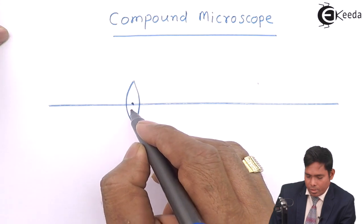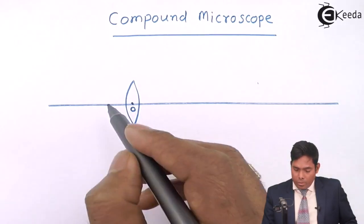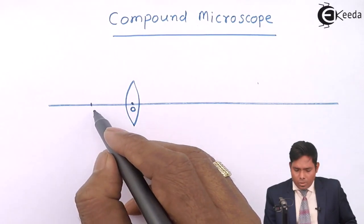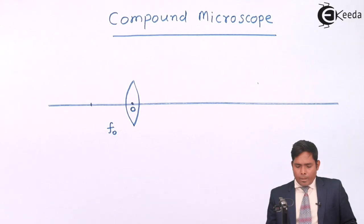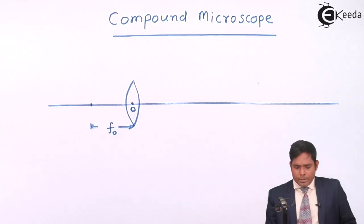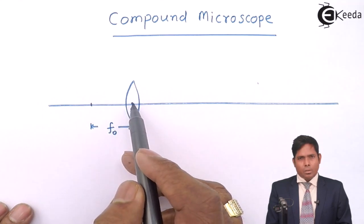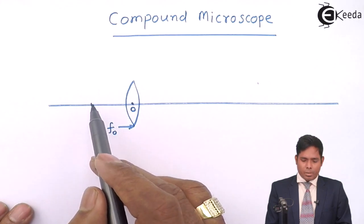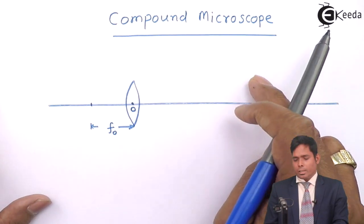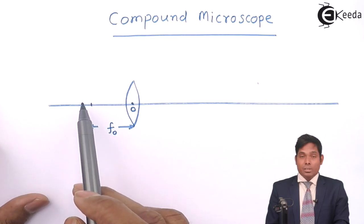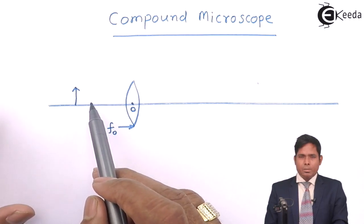The first lens is called the objective. I represent its optical center as O. This is the focal point F_o, with focal length f_o. Unlike in a simple microscope, the object is not placed between the focus and the optical center — it must be placed beyond the focus. If placed between focus and optical center, the image forms on the same side and the second lens has no use.